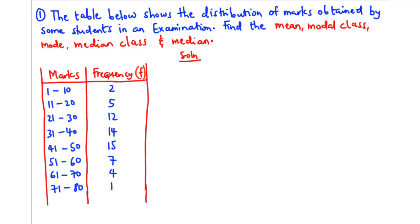We have a question in front of us and we are going to solve it. The table below shows the distribution of marks obtained by some students in an examination. We need to find the mean, modal class, mode, median class, and median for this distribution.